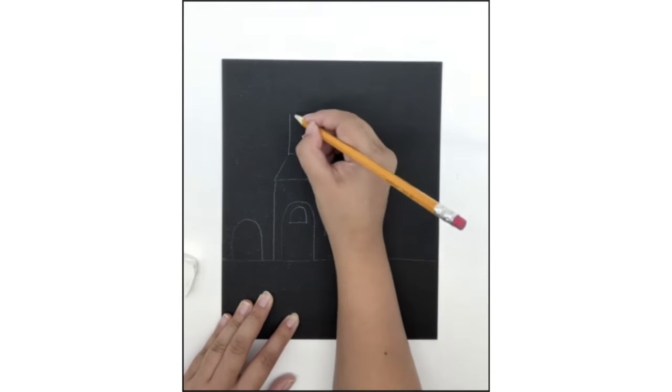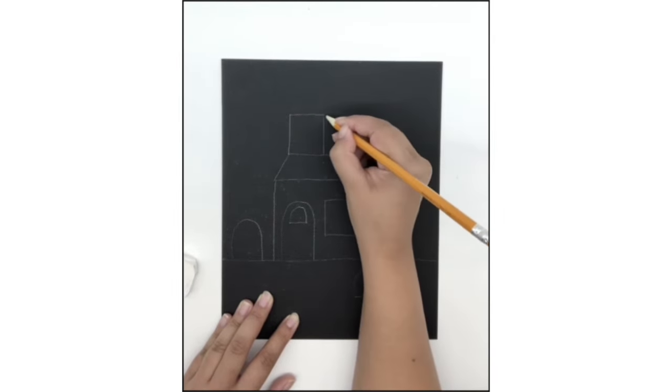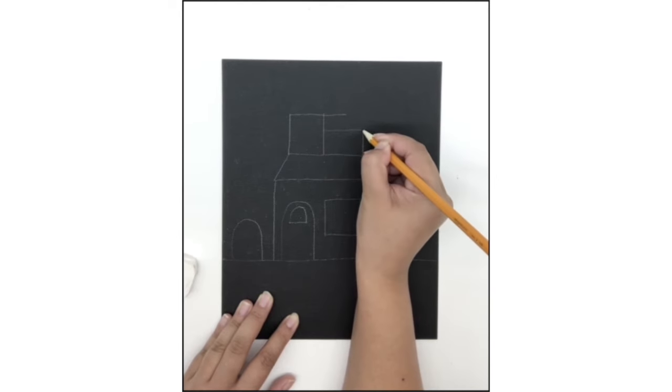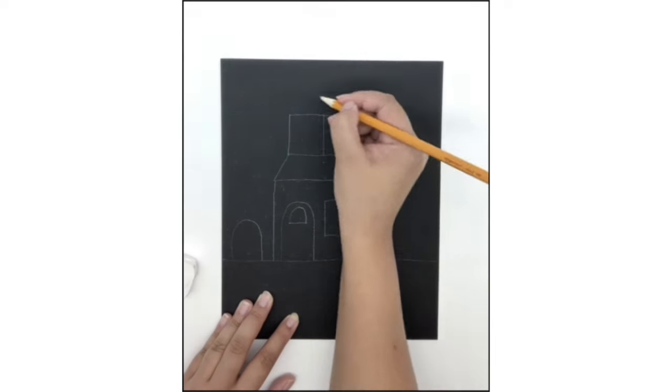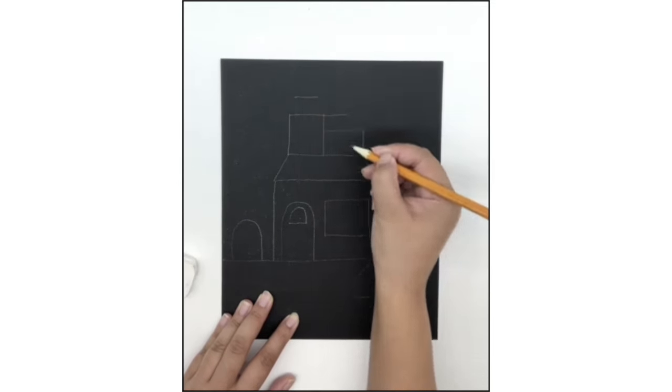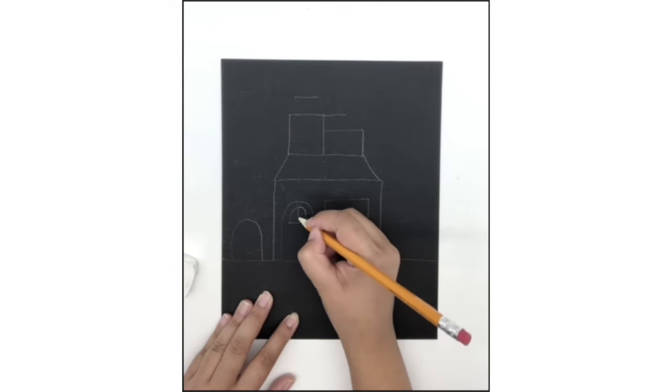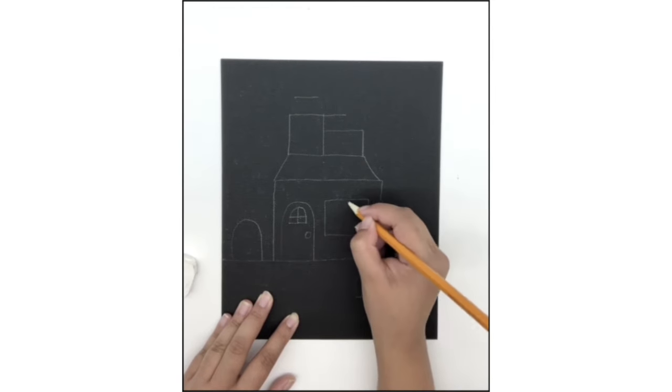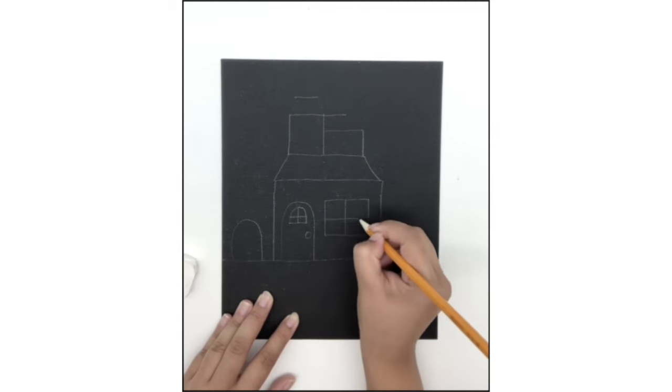Step 4. Let's draw the rooftops to our second story. The left side is going to be taller than the right, so watch carefully how you draw those lines. Draw a T in the middle of both windows in the first story, and add a doorknob. On our right, let's include a friendly ghost.